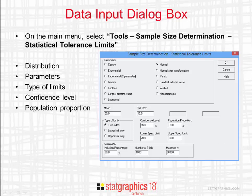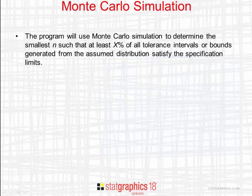The next two edit fields specify the confidence level of the tolerance limits and also the proportion of the population to which they apply. You must also specify either a lower specification limit, an upper specification limit, or both. StatGraphics 18 uses Monte Carlo simulation to determine the smallest sample size n such that at least x percent of all tolerance intervals or bounds generated from the assumed distribution will satisfy the specification limits.